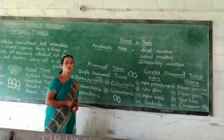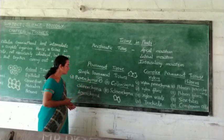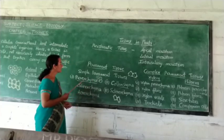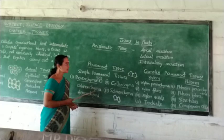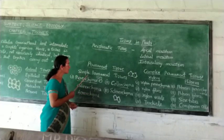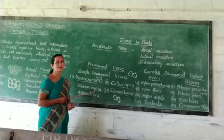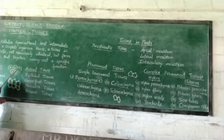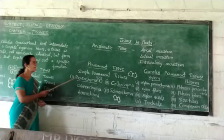Sclerenchyma is found in hard parts of the plant like seed coats or the fiber part of the plant. You have learned about simple permanent tissue. They are called simple because they consist of similar types of cells, as you can see in the similar types of cell structures here.